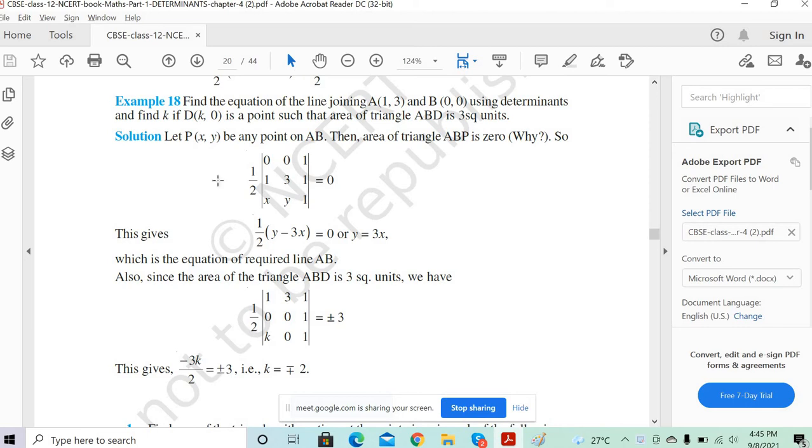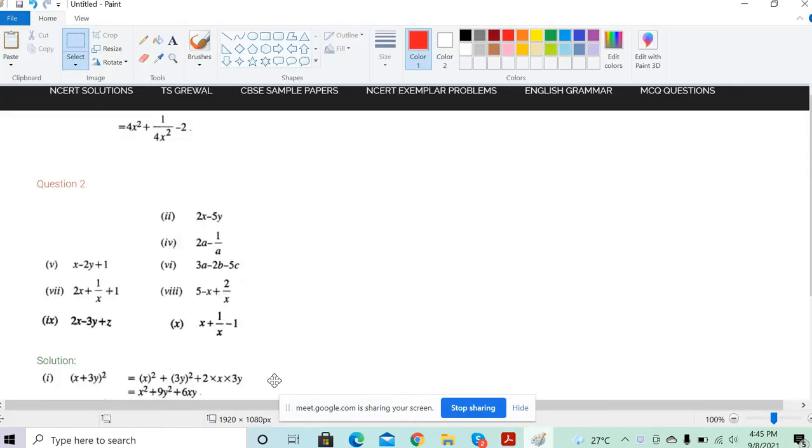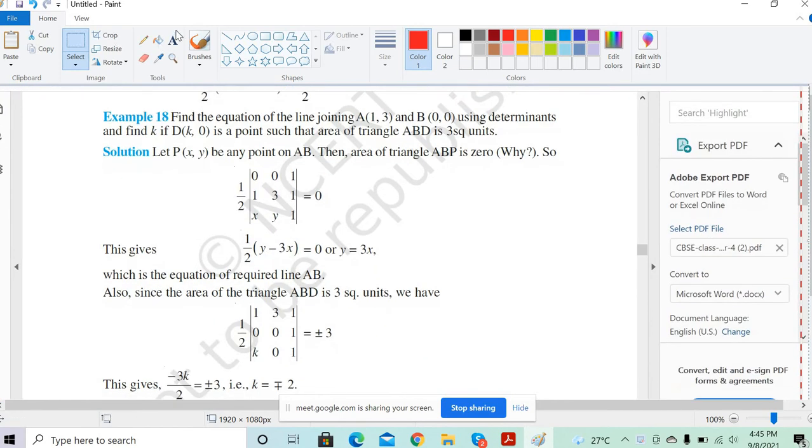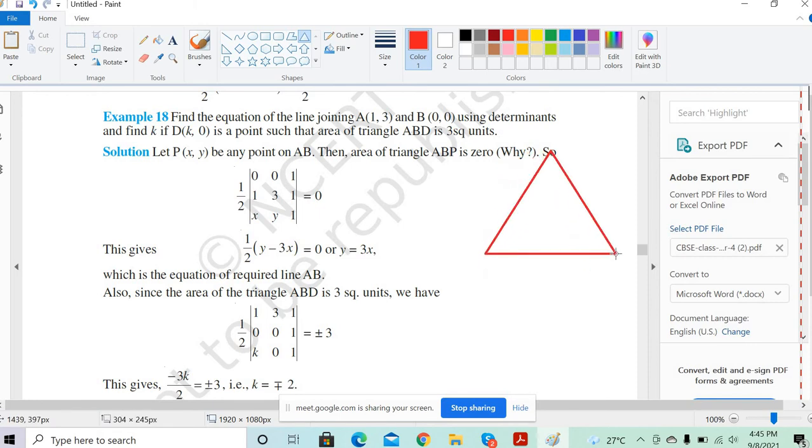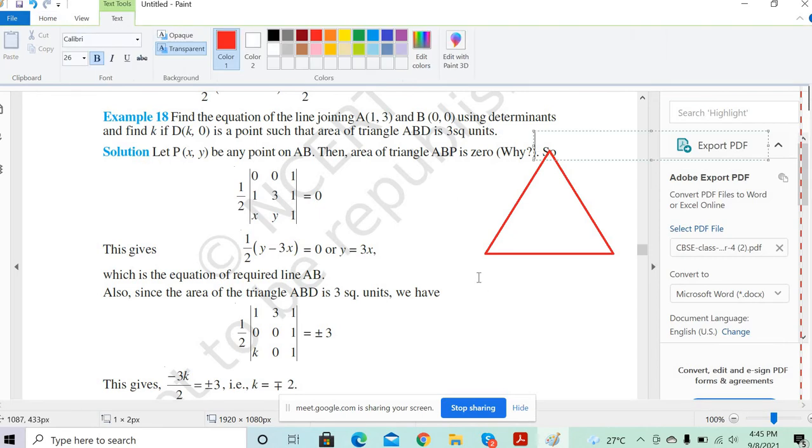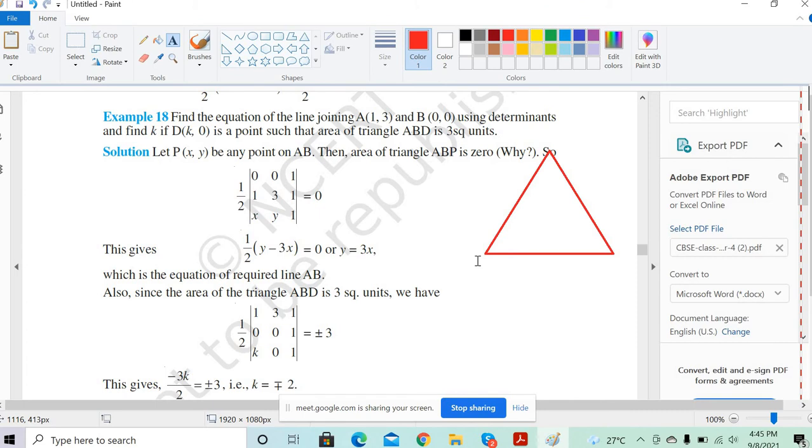Now, let's draw the triangle for you. So let's visualize this problem and then try to understand. What he is telling is, let's say this is the triangle. And you have here A and B are the points for the equation of line joining A and B. So let's say you have A and B here.